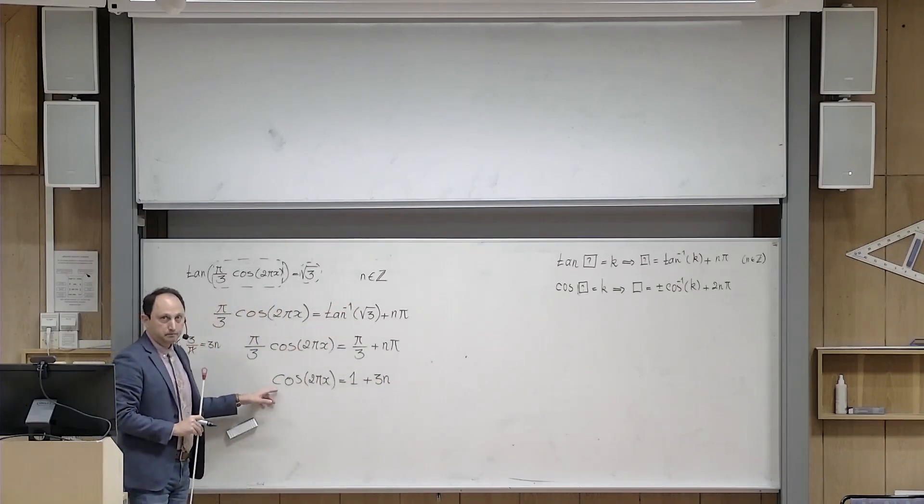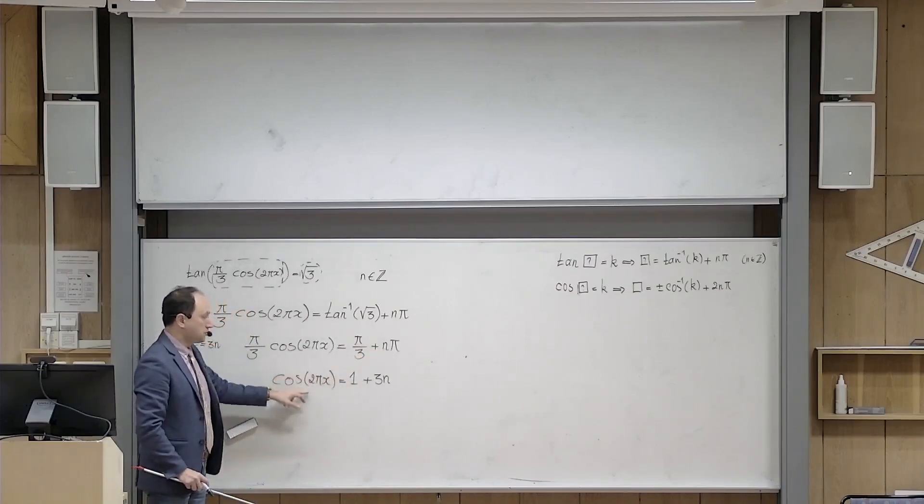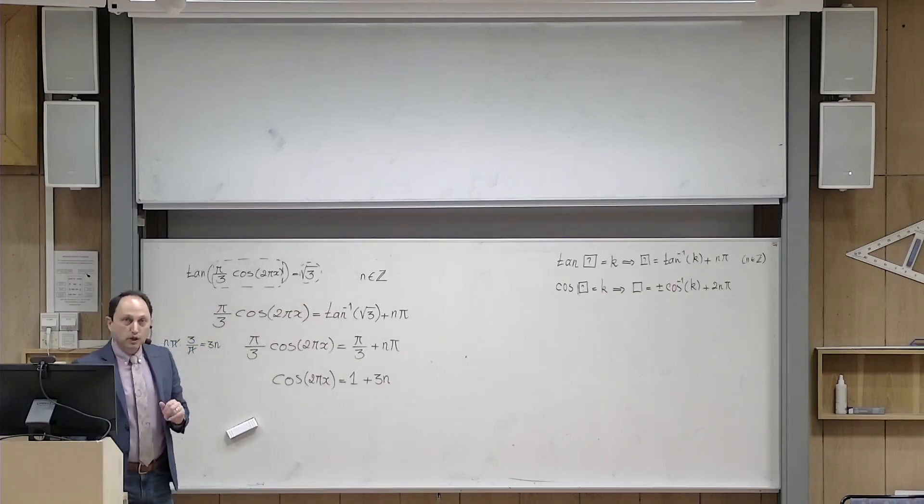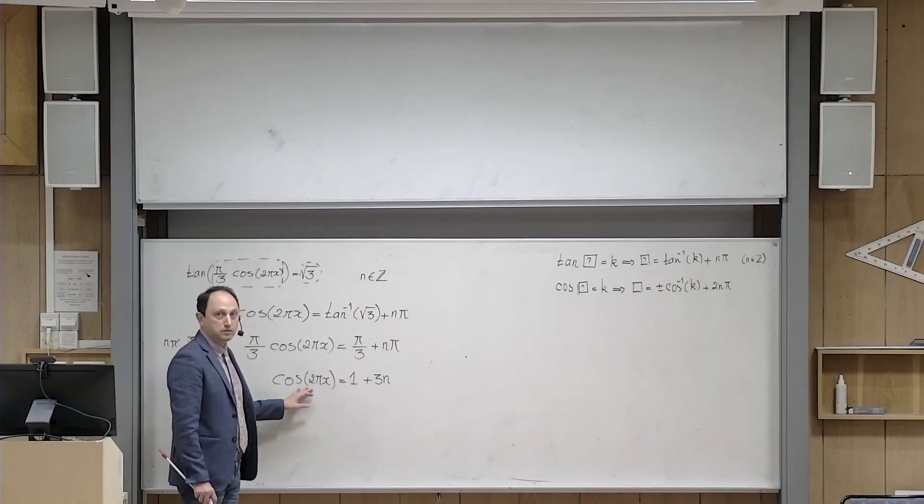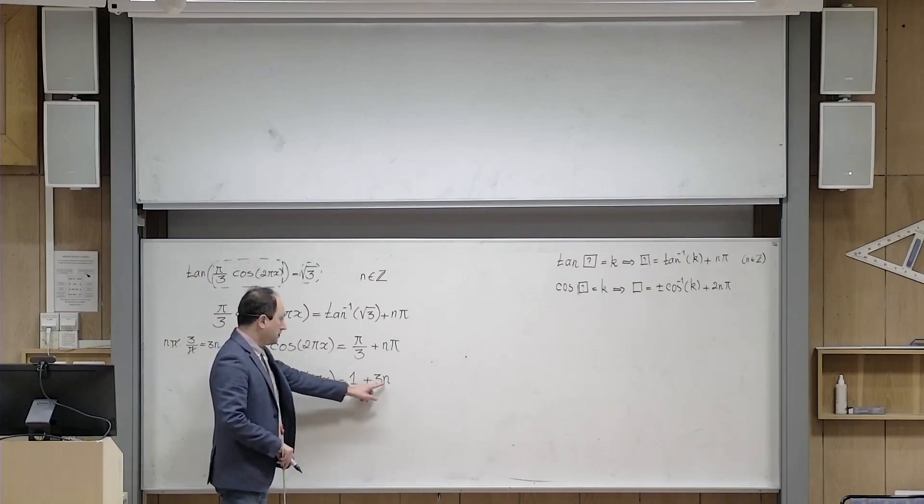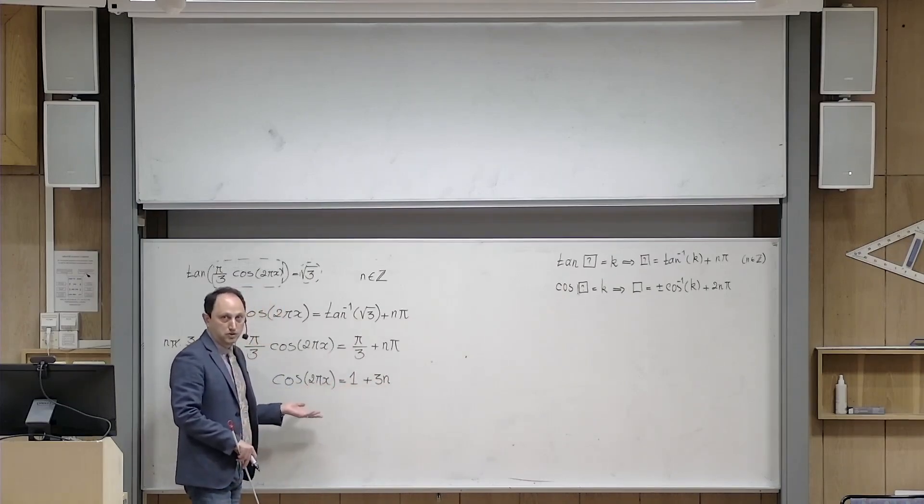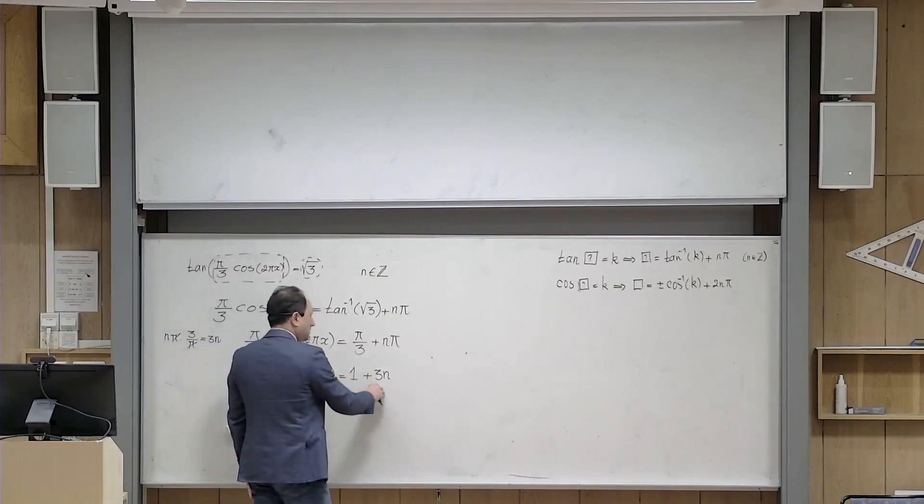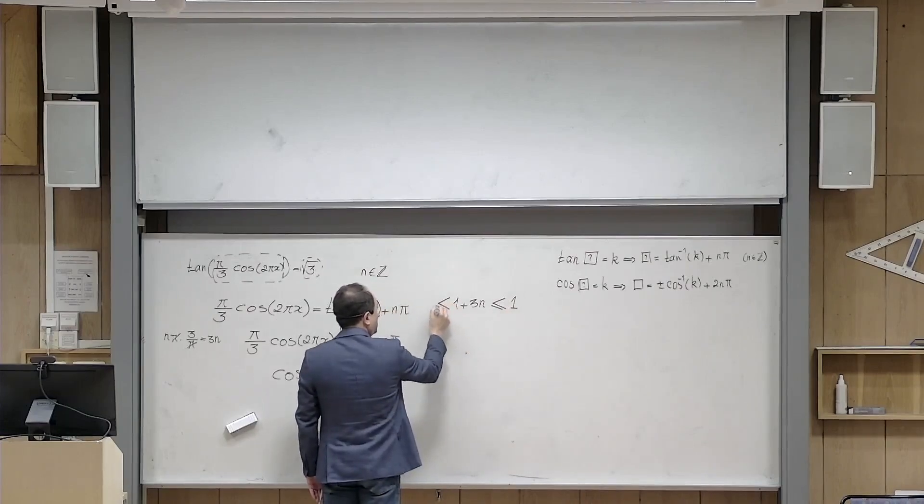There is a delicate point here. I want to use the second formula. I want to give the role of the box this time to 2 pi x, and the role of k to this combination, 1 plus 3 n. But the point is you have to be careful about this: cosine cannot actually attain all possible values. Cosine is maximally 1 and minimally minus 1. So this means that this number, if it is larger than 1 or less than minus 1, will not give rise to any solutions.